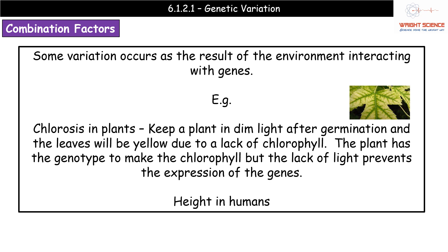To give an example in plants, there is a condition called chlorosis. If a plant is kept in dim light after germination, the leaves that develop will be yellow due to insufficient chlorophyll. The plant has the genotype to make chlorophyll — the genes are there — but because there is no light at germination, those genes are not expressed. Even though the genes are present, they will not actually be expressed, and therefore the required chlorophyll will not be made.